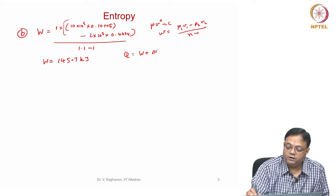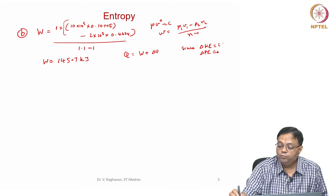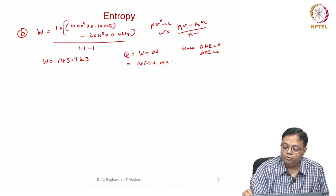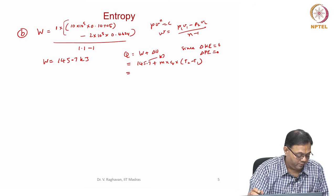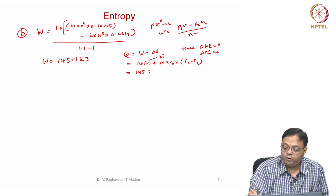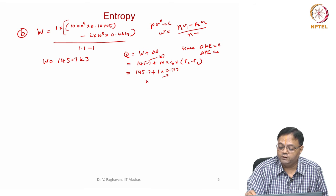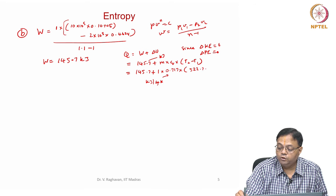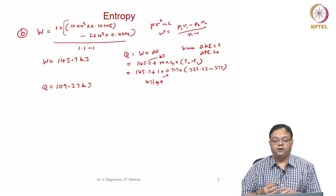Q equals W plus ΔU, since ΔKE = ΔPE = 0. So Q = 145.7 plus M·Cv·(T2−T1). Be careful with units — Cv is 0.717 kJ/(kg·K). T2 is 322.23 minus T1 373. Q equals 109.27 kilojoules. That is the work and heat transfer for this part.